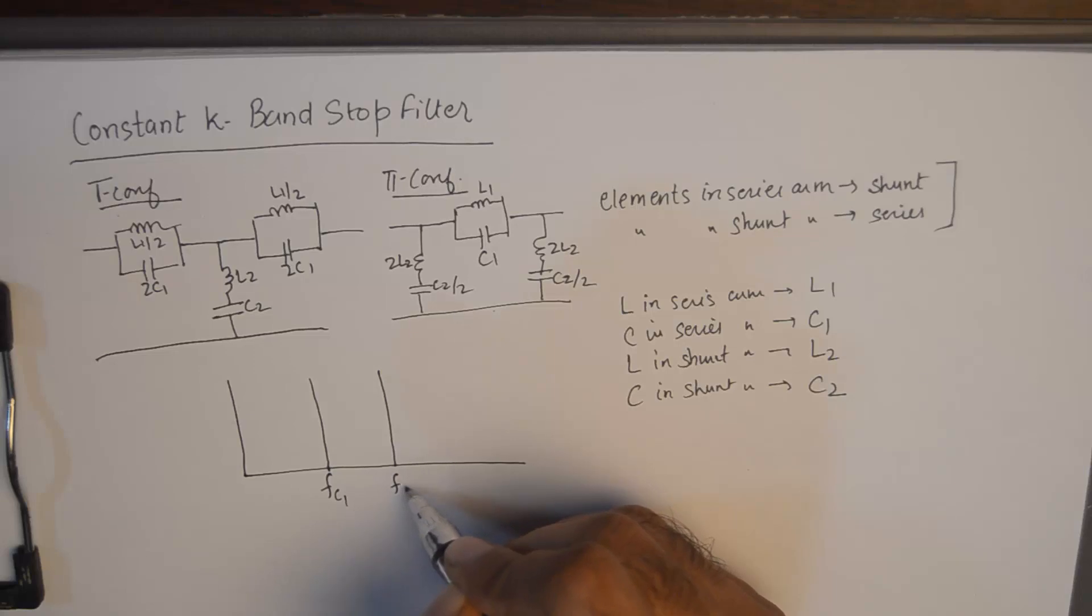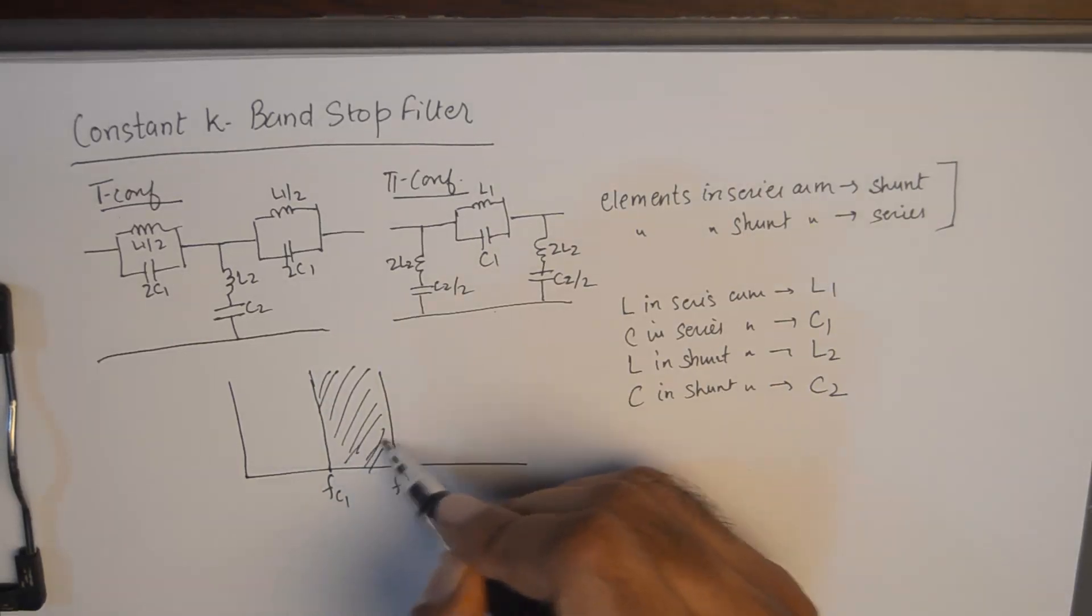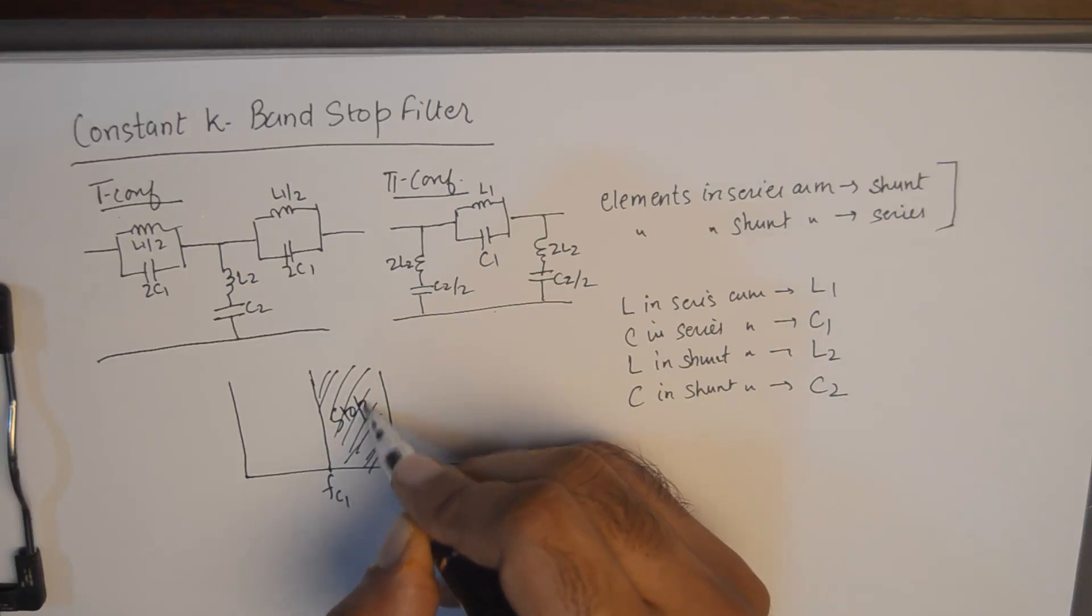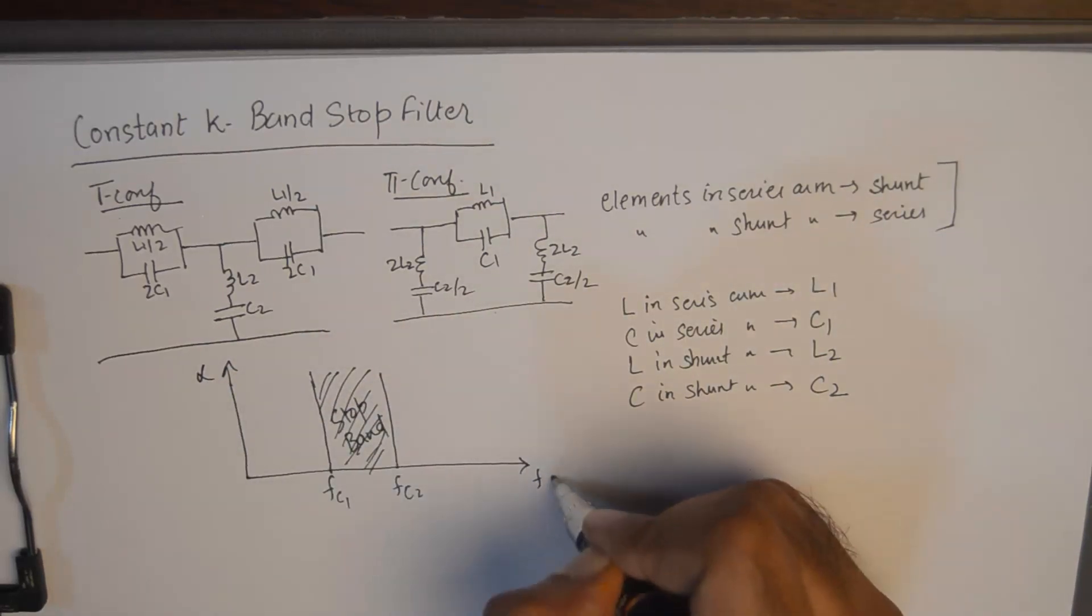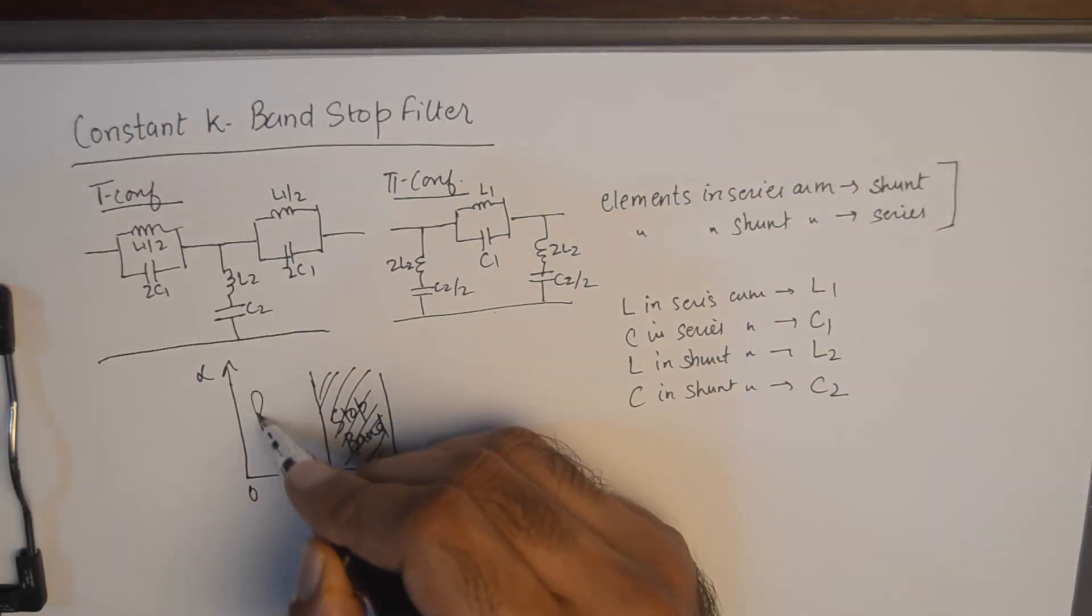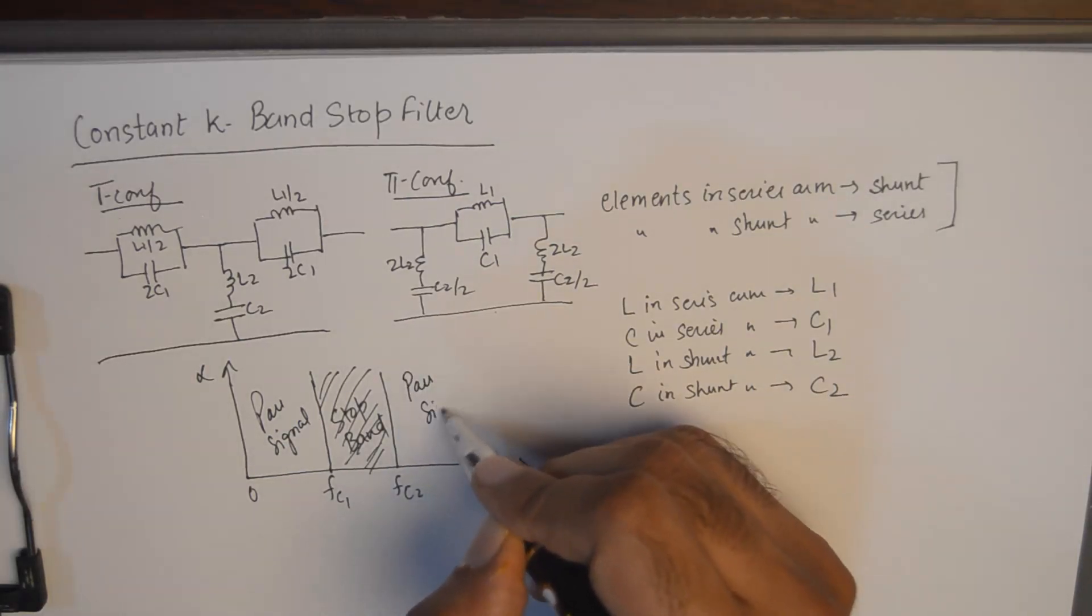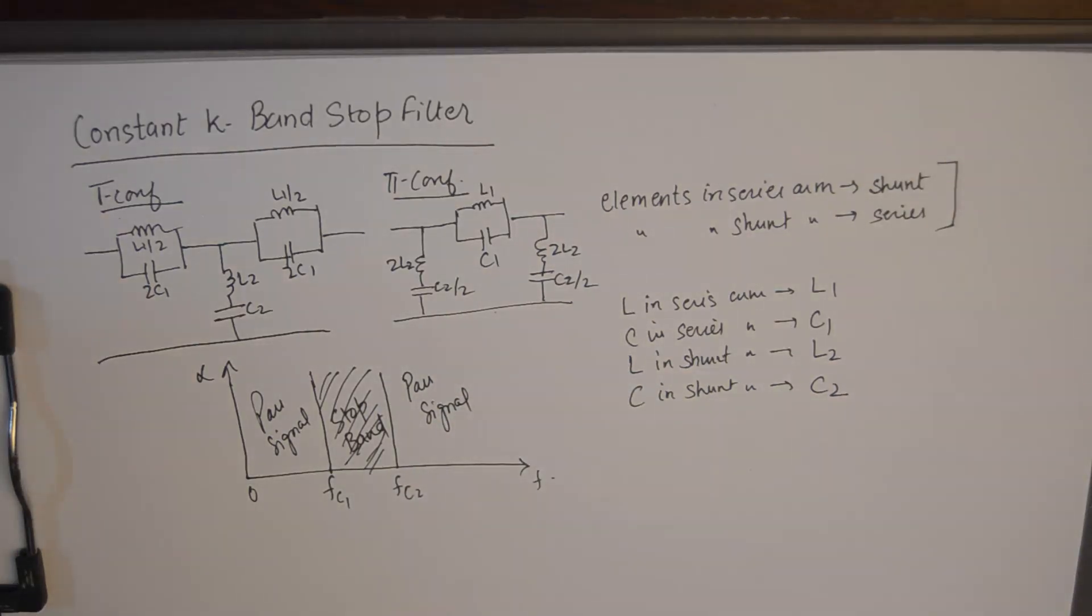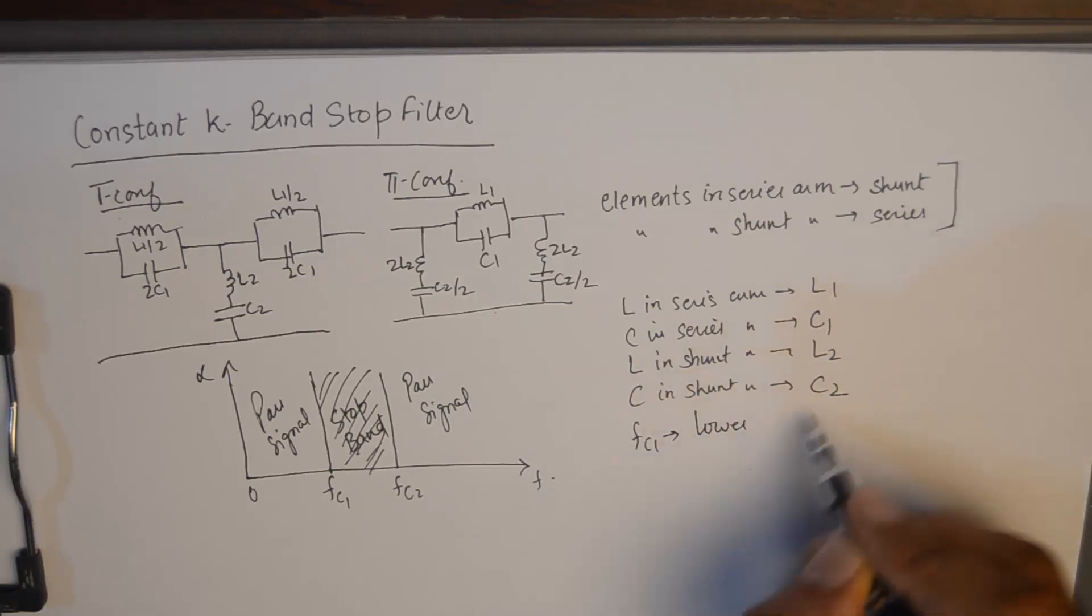For the cut-off frequencies F1 and F2, this filter will offer infinite attenuation. So this will be the stop band for the band stop filter. And from 0 to Fc1 it will pass the signal, and from Fc2 onwards it will pass the signal. We've got two cut-off frequencies: Fc1 is the lower cut-off frequency and Fc2 is the higher cut-off frequency.